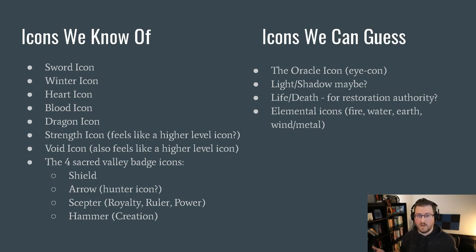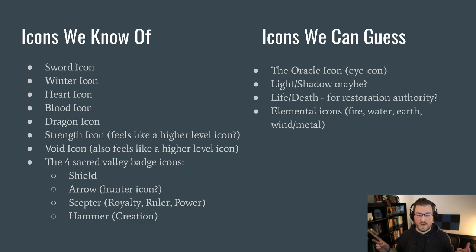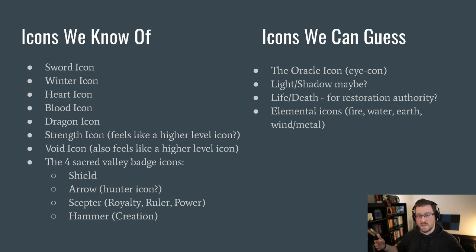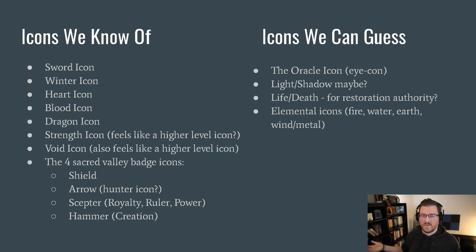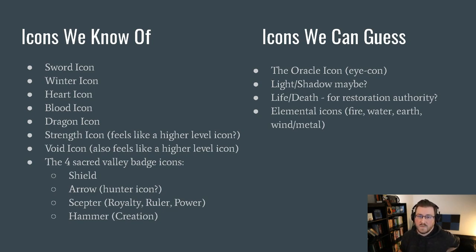We've got the shield icon, the arrow icon — which I think might be like the hunter icon — the scepter, which is like royalty or power over other humans or leadership, and the hammer. The hammer has symbolism all the way up to the highest levels of magic. Adriel, the judge, was the creator and his symbol was the hammer of creation — representing creation, creativity, and the arts on Cradle. Most of the divisions of the Abaddon are named the way they are because the founding members came from Cradle.